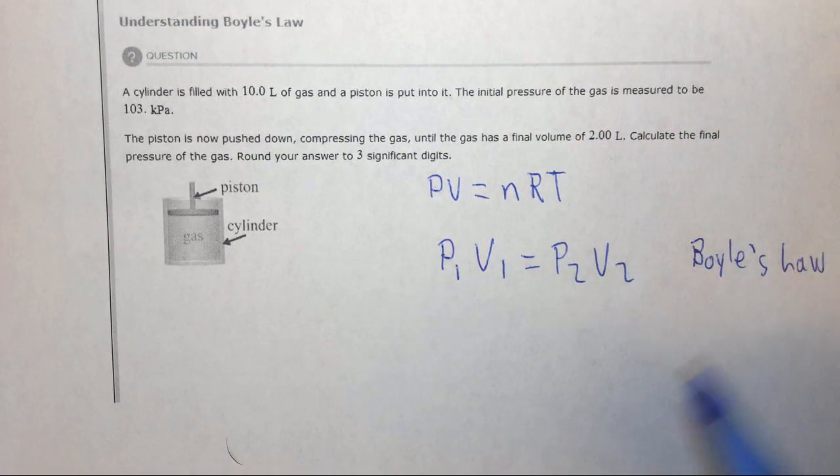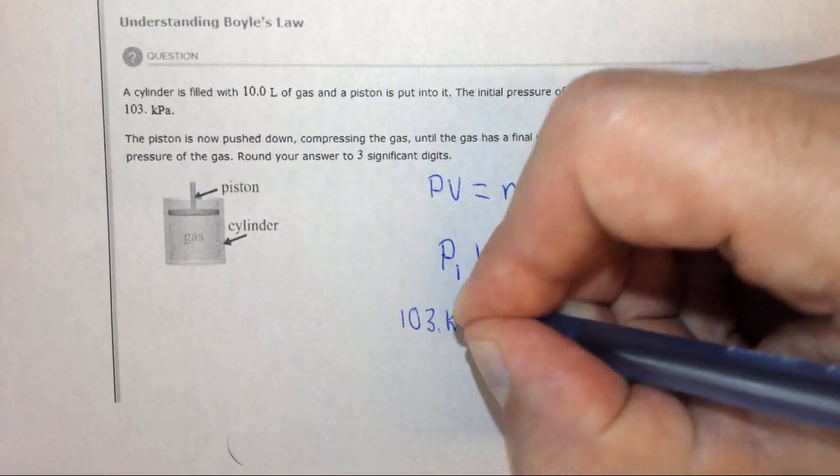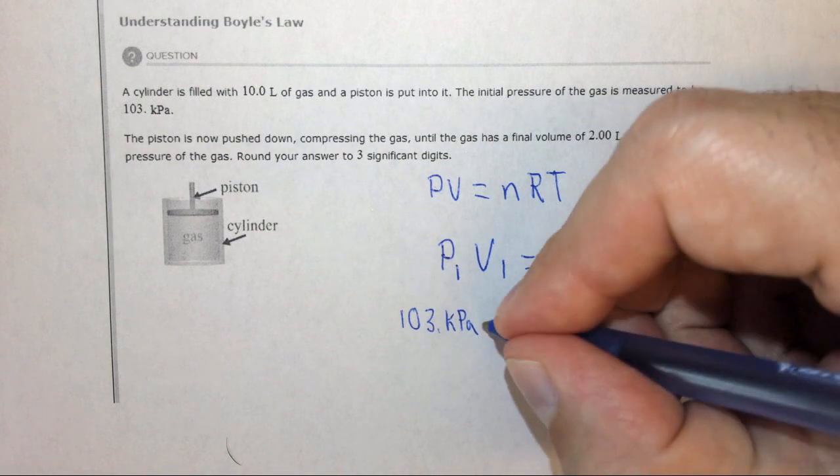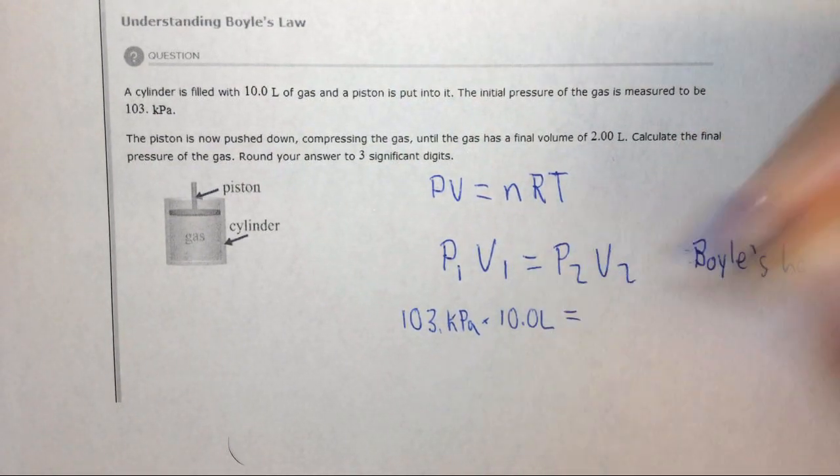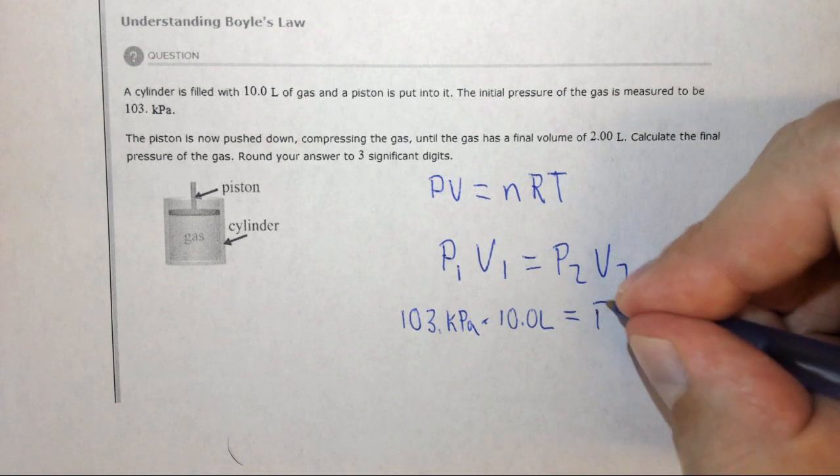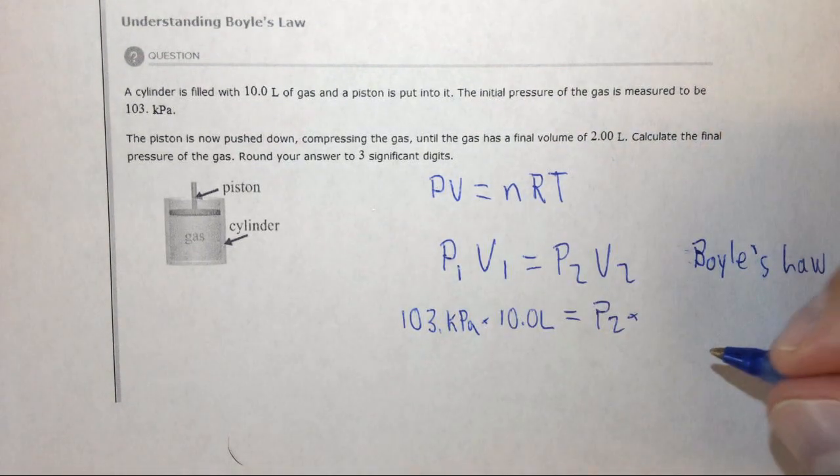Now let's plug in. The initial pressure is 103 kilopascals times the initial volume, which is 10 liters, equals the final pressure—that's what we're trying to figure out—times the final volume, which is 2 liters.